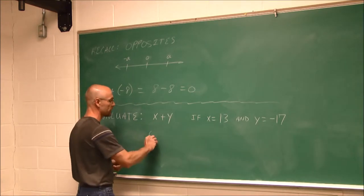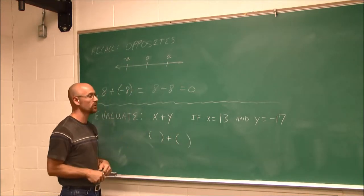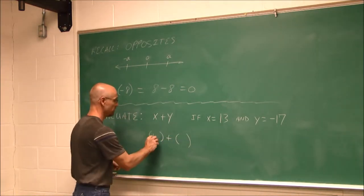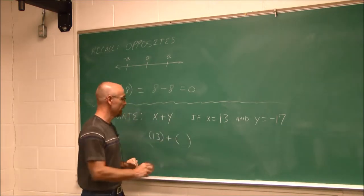Well, we're going to put these values in, and I'm always going to use parentheses when I substitute in values. So for my x value, I have 13, so I put that in that parentheses. And my y value, I have negative 17.